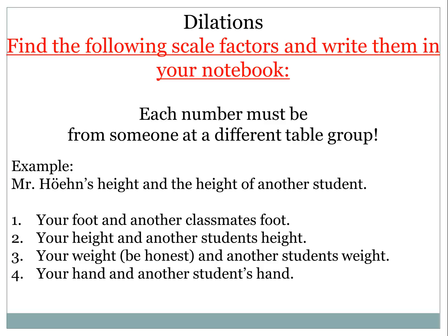I am not a short man. I am actually 74.5 inches tall — that's 6'2½". So one way to think about this is by comparing my height to your height. If you're a typical 8th grader somewhere around 5'5", that would make you 65 inches tall. So 74.5 over 65 would give you a scale factor bigger than 1, because to get from your height to my height, you have to get larger.